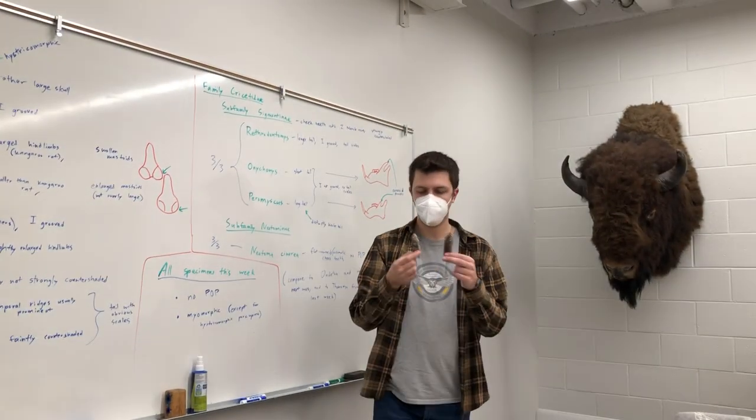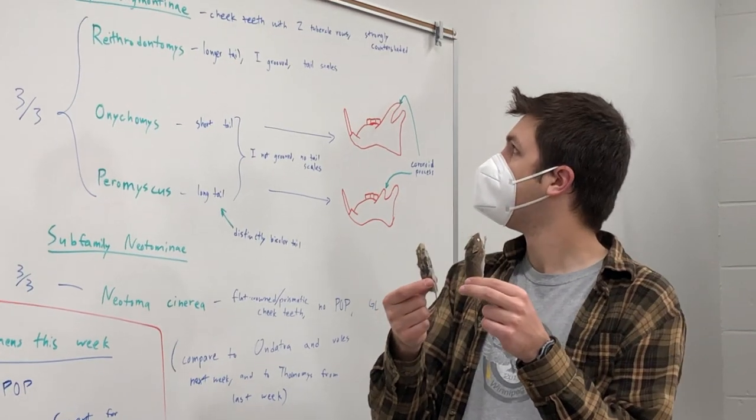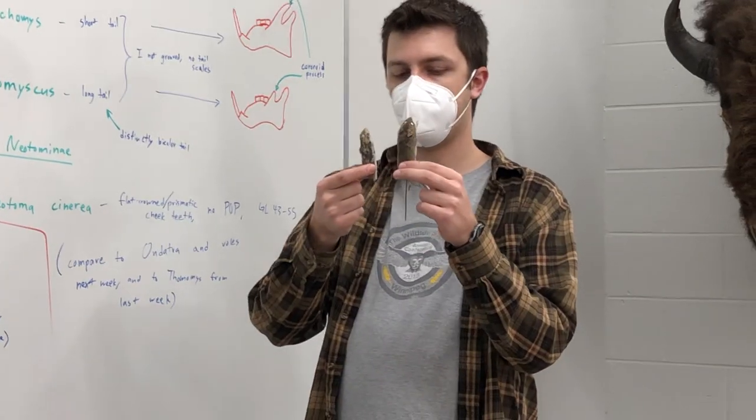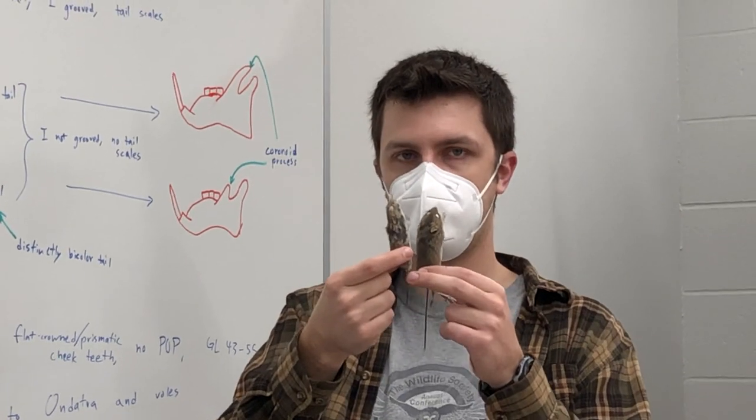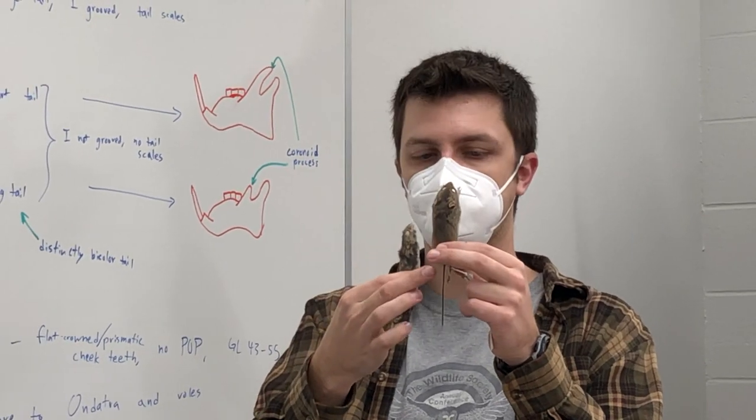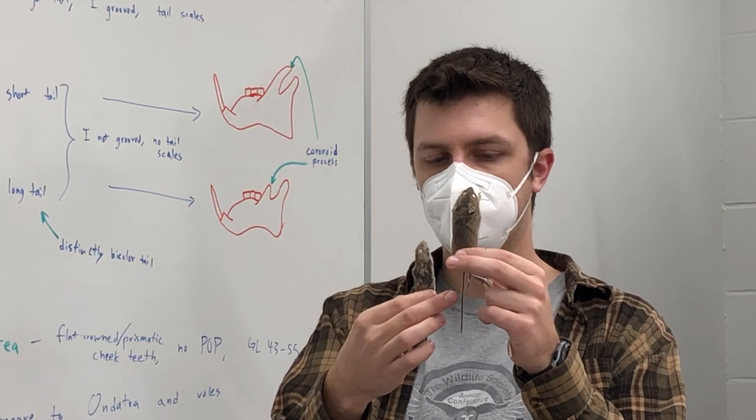With the two other mice, then the difference is looking at the tail. The Reithrodontomys, this harvest mouse, the tail has scales versus Peromyscus. The tail has fur.